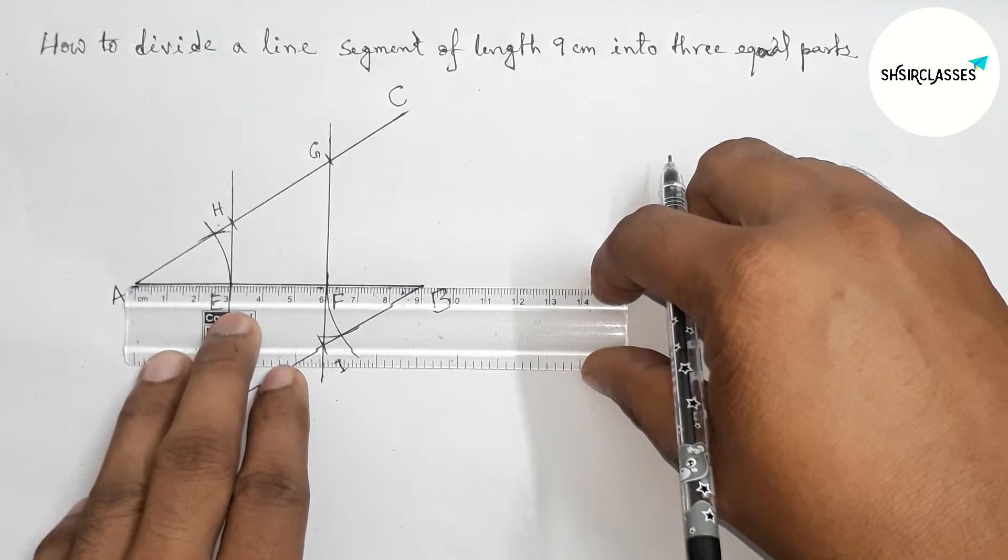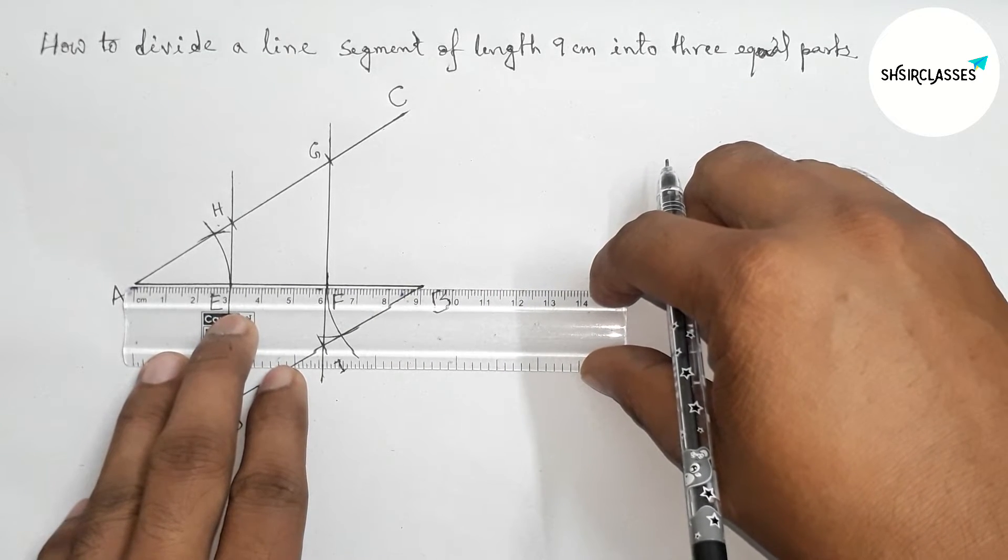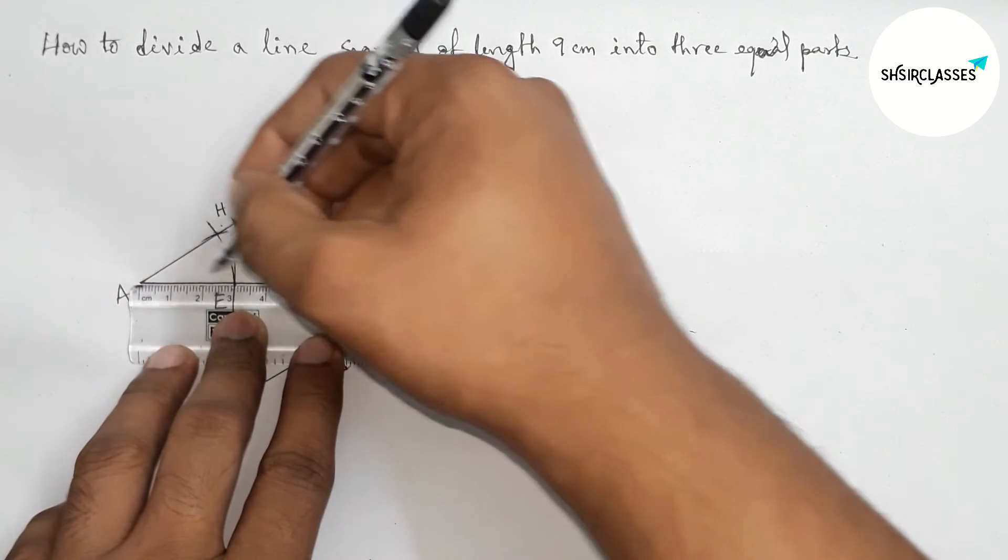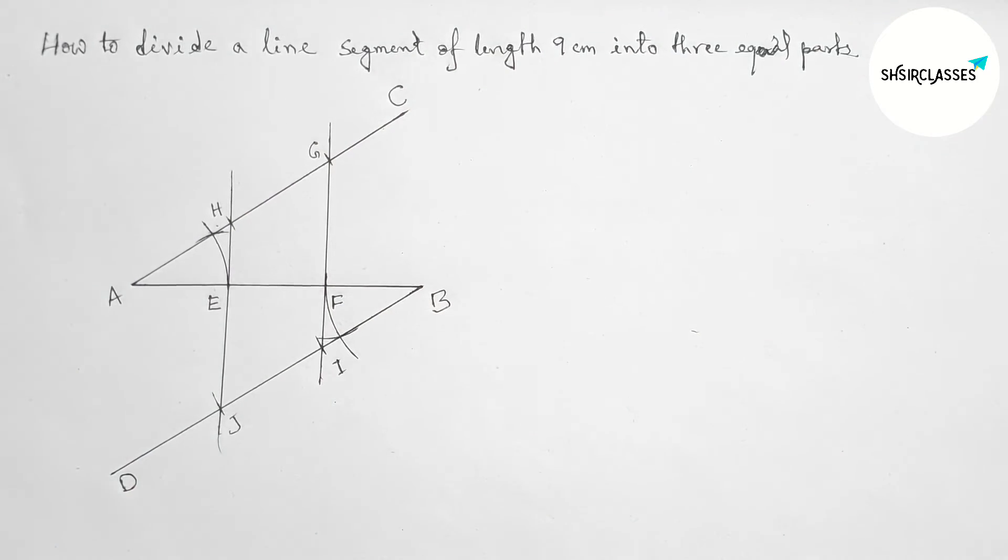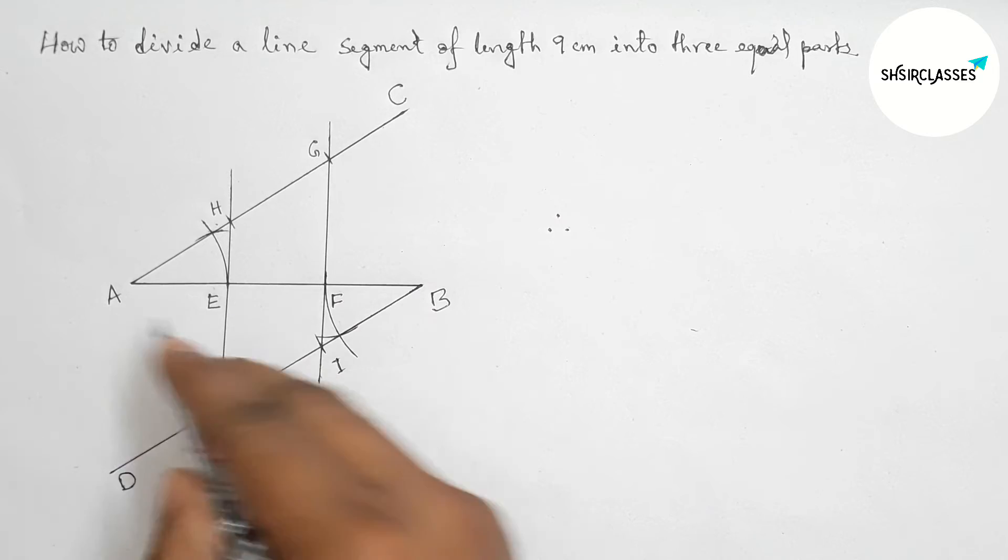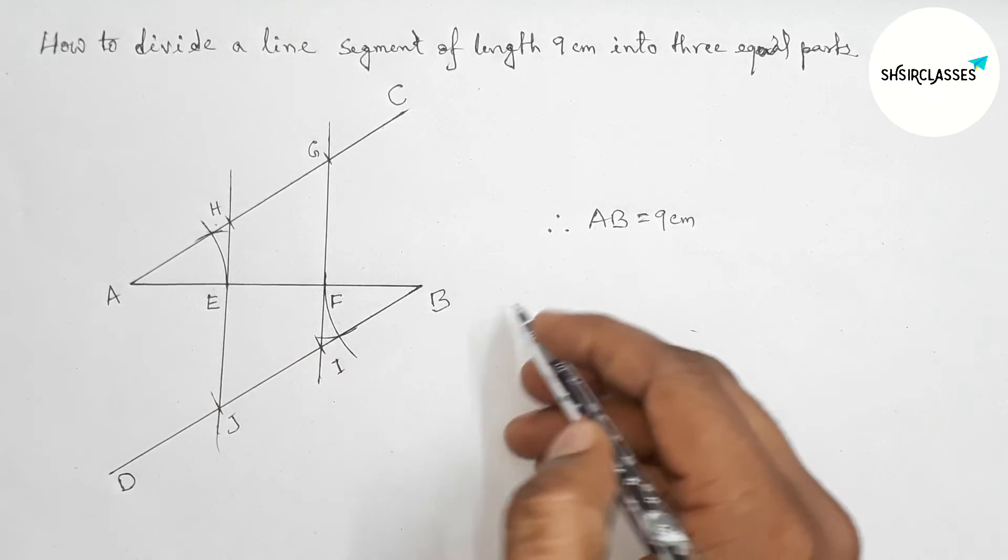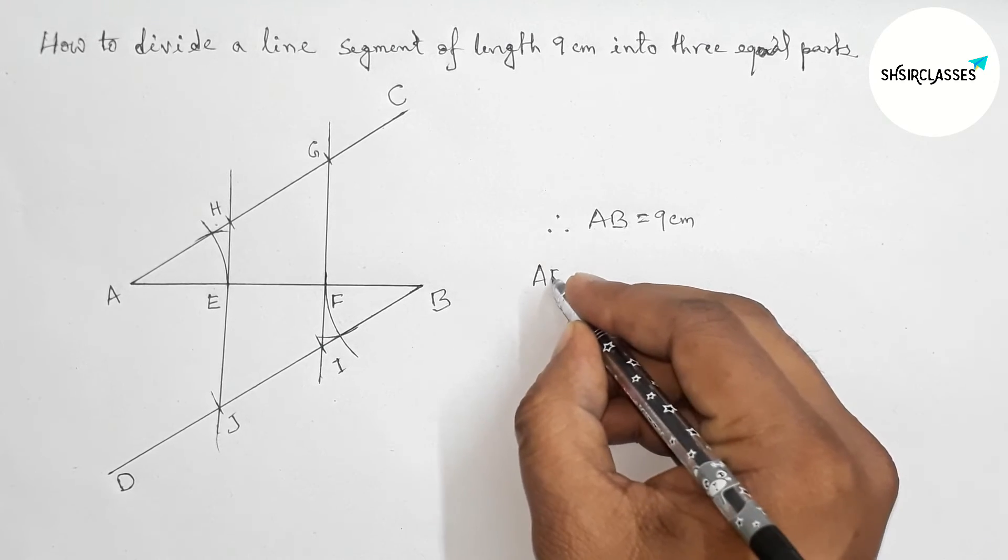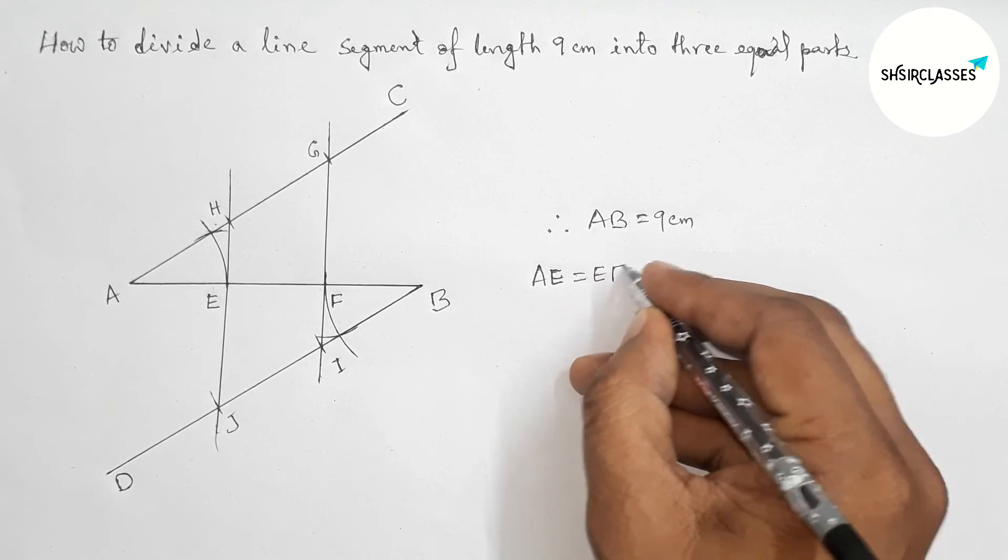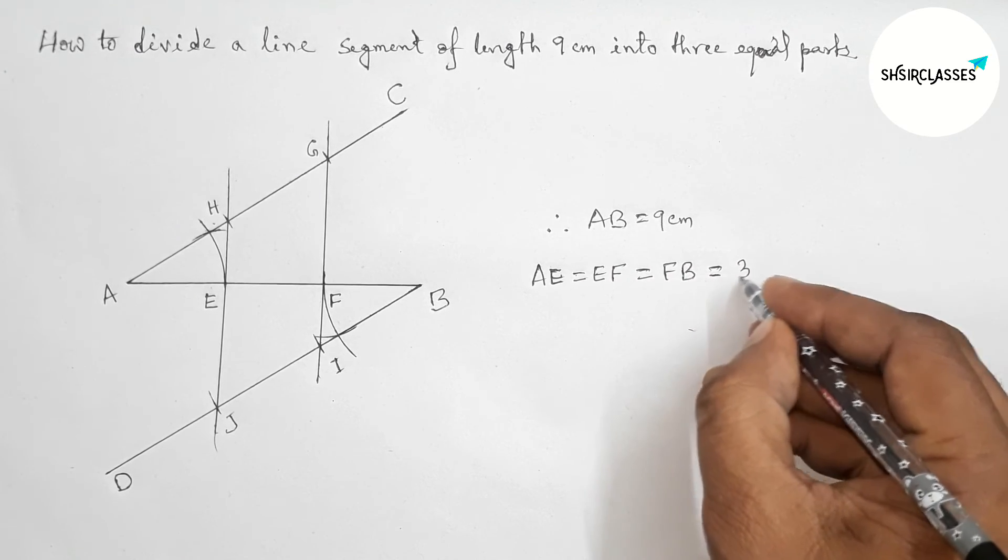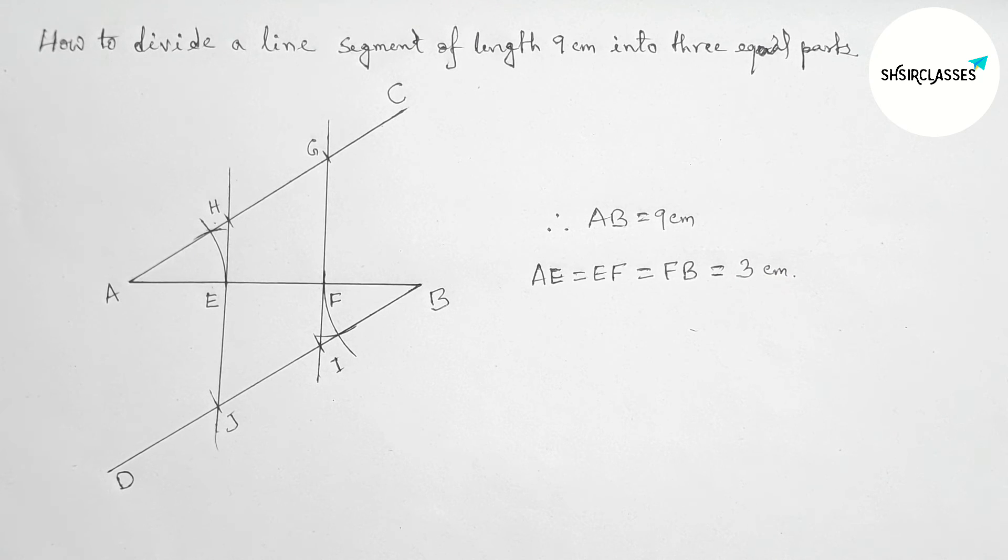So here you can see this is so perfect, so here this is three, six, nine, so this line perfectly divides into three equal parts. So here AB, this is nine centimeter, and all the three parts is AE, EF, and FB, this is three centimeter. So that's all. By this way you can divide a line segment.